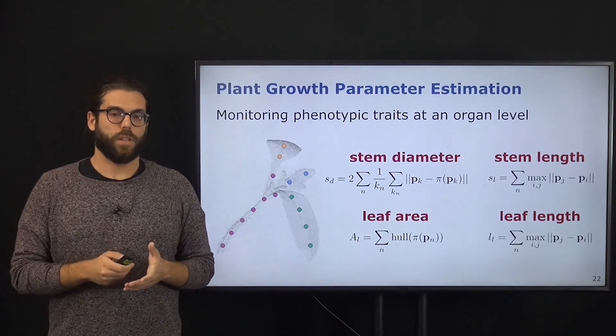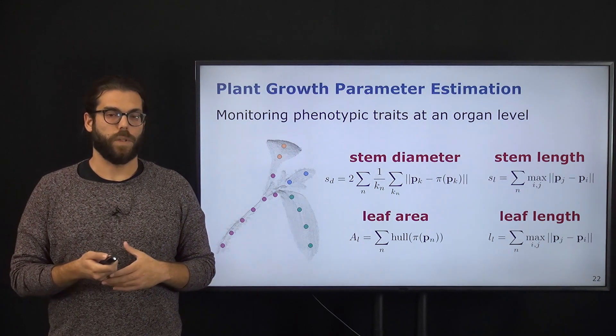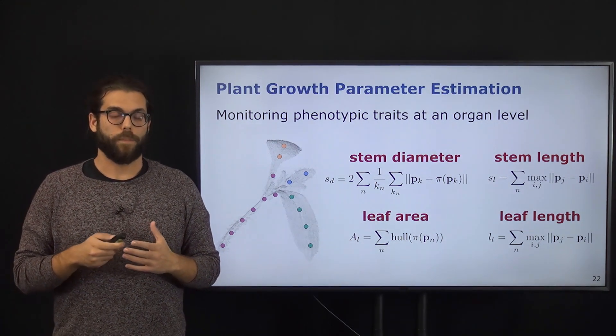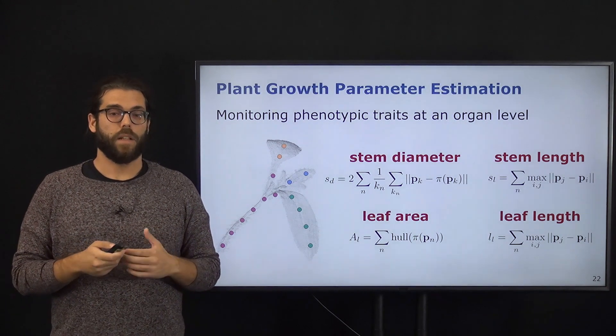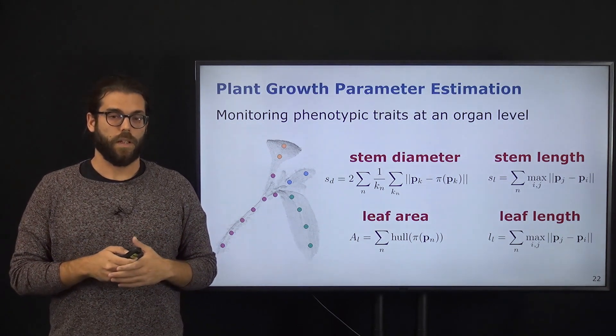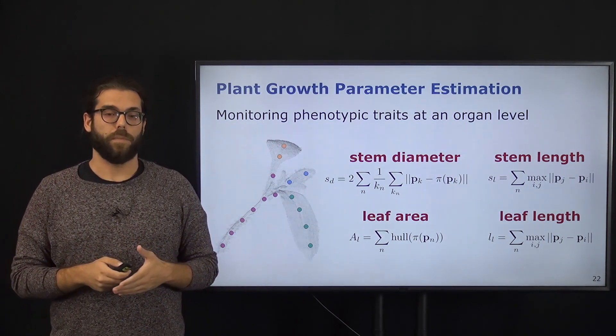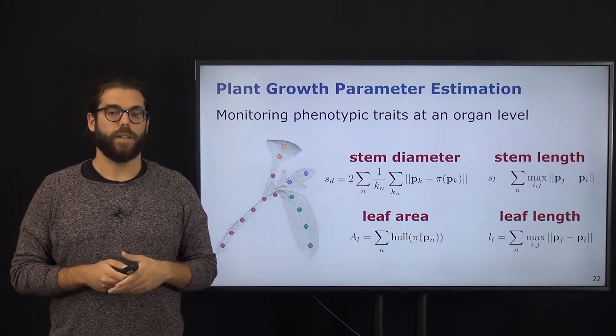Once we have done this data association, we are able to compute different traits of our plants over time and track them. For example, we can compute the stem diameter, stem length, leaf area, and leaf length.